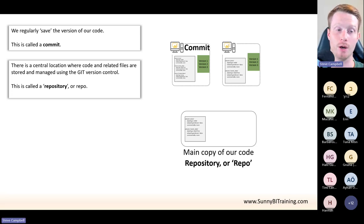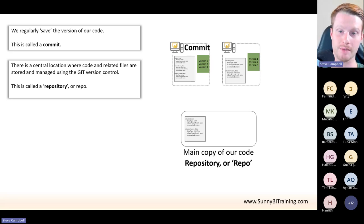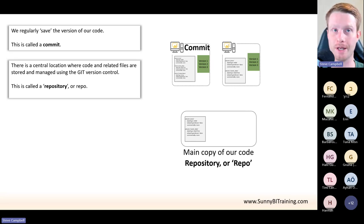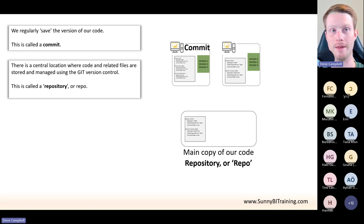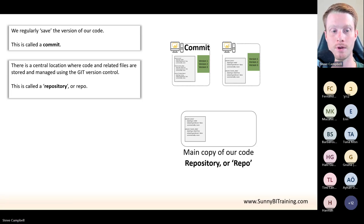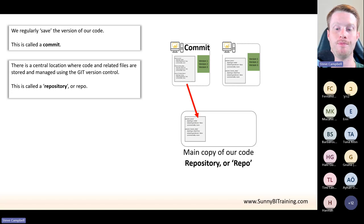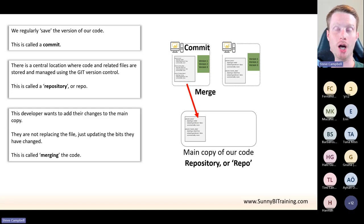When you hear the term repo, it just means this main copy of the code. That main copy is going to be stored in the cloud online somewhere because everyone has to access it. Our versions that we're working on and committing are on our local machine. One thing about Git — you can do it offline, you don't need to be connected to the internet. Once I've made my changes, I want to add them back to the main copy of the code, and this is called a merge.